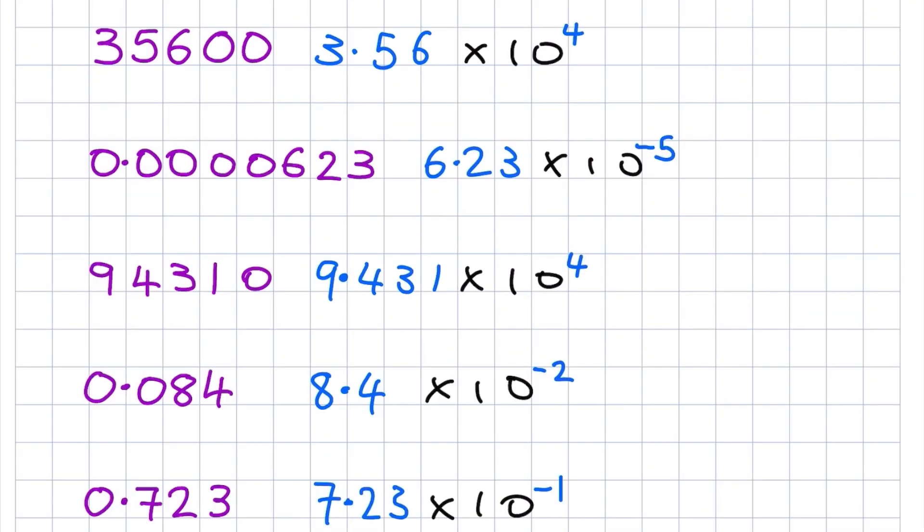If you want to go backwards and convert standard form to an ordinary number, then you just need to put the point. So the point here is between 6 and 2, so I'll put it here. And then the little index number is minus 5, so we jump the decimal point backwards 5 steps. 1, 2, 3, 4, 5. You put the decimal point here and then you get your answer. Remember, if you're doing this yourself, then these zeros won't be there, so you'll have to put them in.